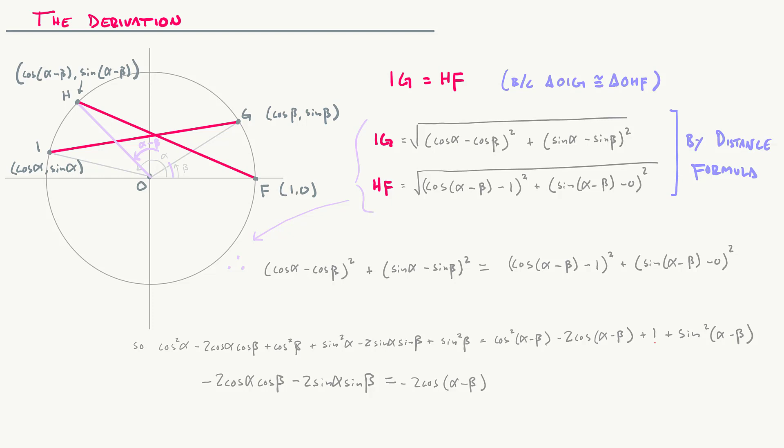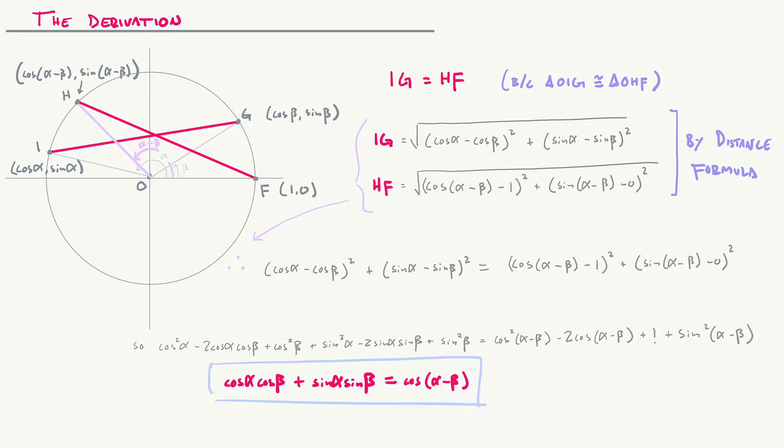Notice that everything has a coefficient of negative two, so I'm going to divide everything by negative two. We get cosine alpha cosine beta plus sine alpha sine beta equals cosine of alpha minus beta. And that, ladies and gentlemen, is the difference identity for cosine.